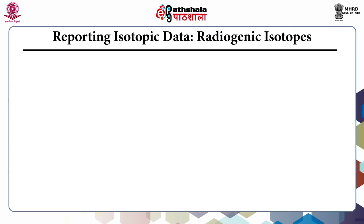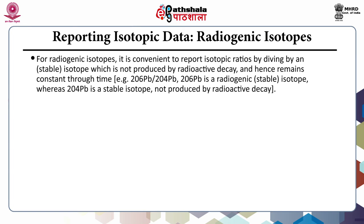For radiogenic isotopes, it is convenient to report isotopic ratios by dividing by a stable isotope that is not produced by radioactive decay and hence remains constant through time. For example, lead-206 divided by lead-204: lead-206 is a radiogenic stable isotope, whereas lead-204 is a stable isotope not produced by radioactive decay.